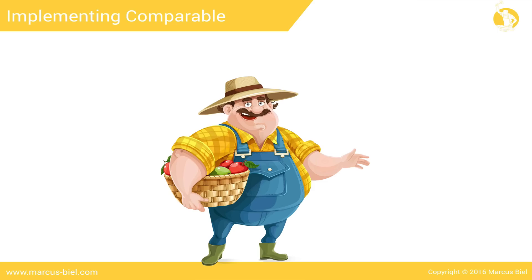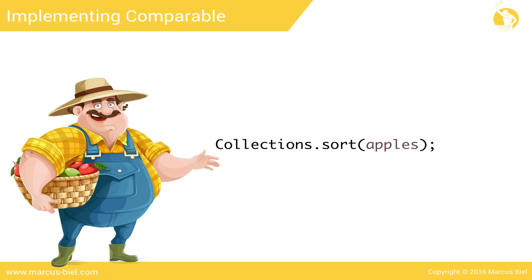Okay, let's put all this into practice. May I introduce you to Fatty Farmer, our client. As you might have guessed, he wants us to write a program that will sort his apples. In the first version, he wants the apples sorted by weight. Implementing the sorting logic is quite simple — we can do it with just one line of code. Collections.sort will do it all for us, if we defined how to compare apples beforehand.